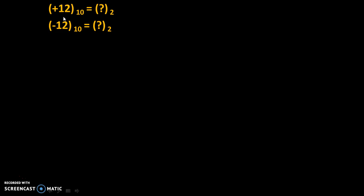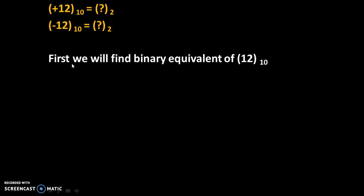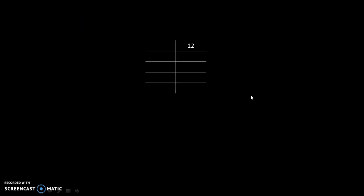Suppose we need to convert plus 12 and minus 12 into binary. Plus 12 is a decimal number with base 10, and minus 12 is also a decimal number with base 10. We need to convert these into base 2 format, meaning binary format.